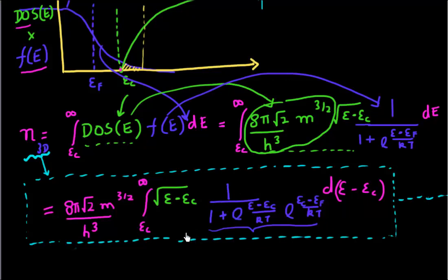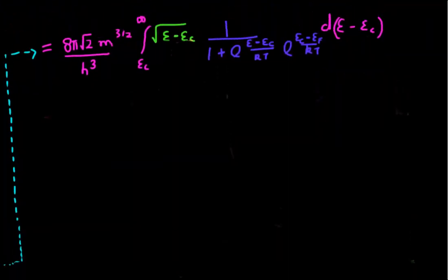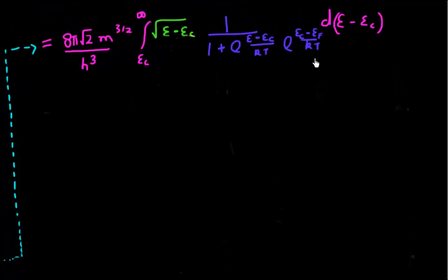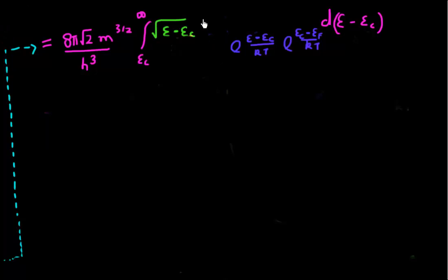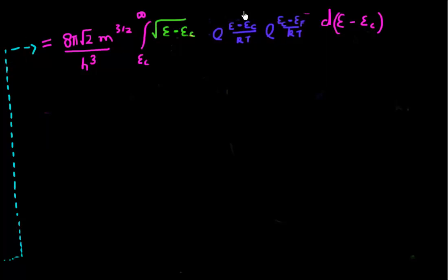Let me assume that is the case, and then I'll try to replace the Fermi-Dirac statistics with a simpler-looking exponential function given by Boltzmann statistics, and see whether I can evaluate this integral. I've repeated that horrible-looking integral here. Instead of using Fermi-Dirac statistics — which involve 1 divided by 1 plus exponential — I'll use Maxwell-Boltzmann statistics. So those terms go away, and I'm left with just a negative power of the exponential.